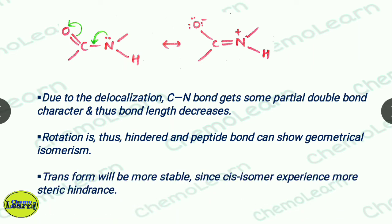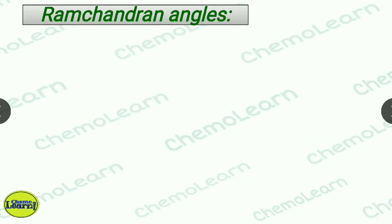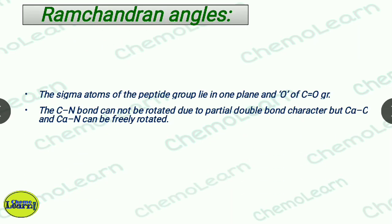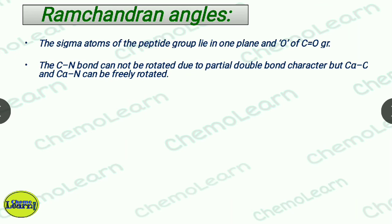Due to the partial double bond character, rotation around the C-N bond is restricted — it is not free. This leads to geometrical isomerism: cis and trans forms. The trans form is stable because in cis there is steric hindrance from bulky groups. In the trans form, oxygen and hydrogen are on opposite sides. However, for C-alpha bonds, rotation can be free.